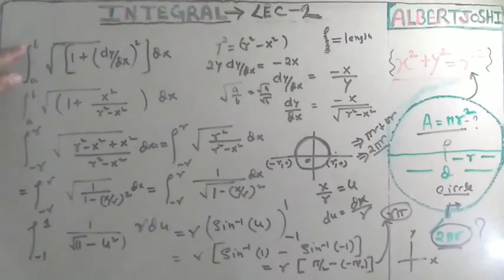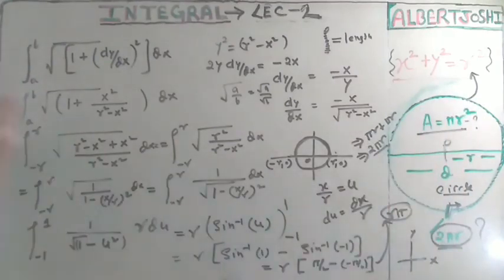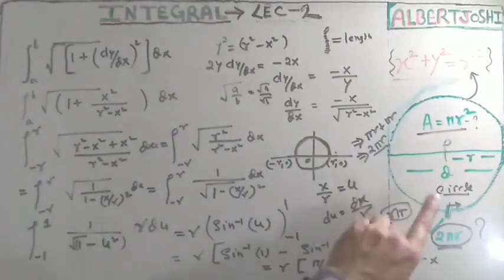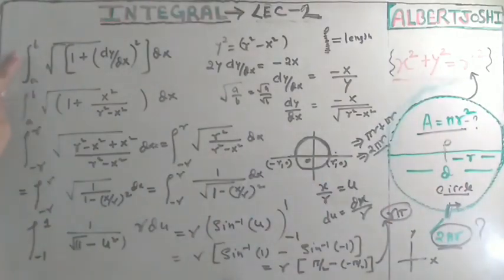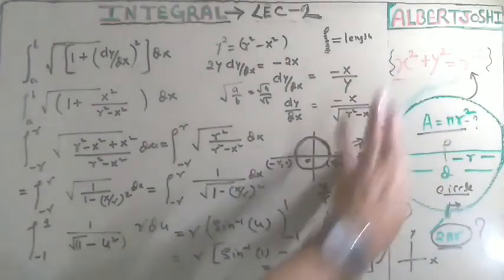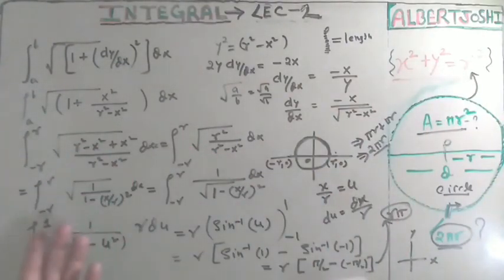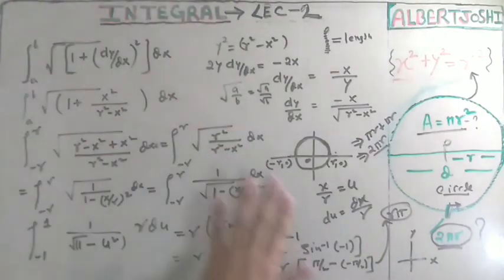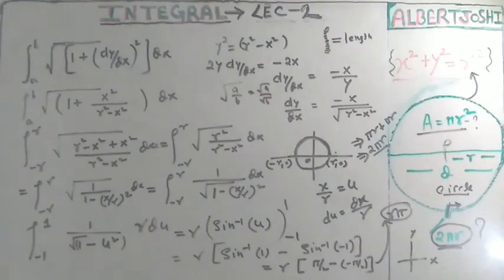So what we have done is counted the total number of pixels from one point to another using integration to measure the length of the circumference. By the help of integration, we can find the length of any function — any circle, any straight line, anything. In the next lecture, we will solve exam questions. Thank you so much.